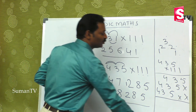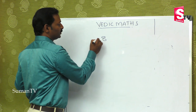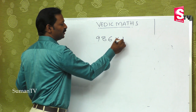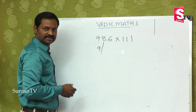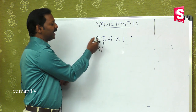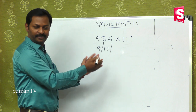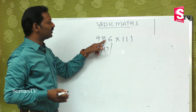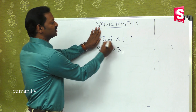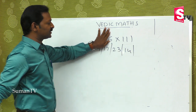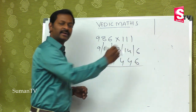Let's take one more example. Suppose 986 multiplied by 111. First digit is 9. I will put a slash because the balancing rule applies. 9 plus 8 is 17, then 17 plus 6 is 23. Whenever the sum completes 3 digits, close this. Last 2 that is 14, and last digit is 6. So the final answer is 6, 4, 4, 9, 1, 0. This is the right answer.